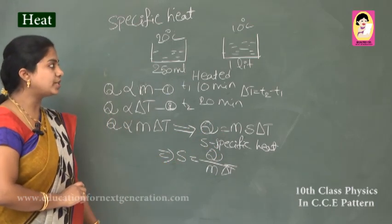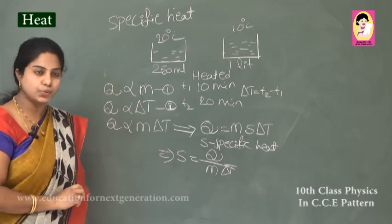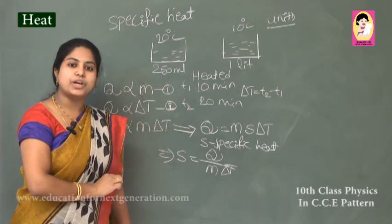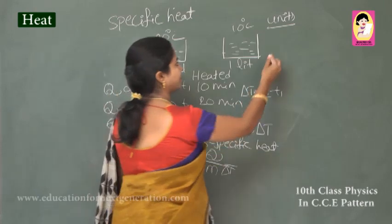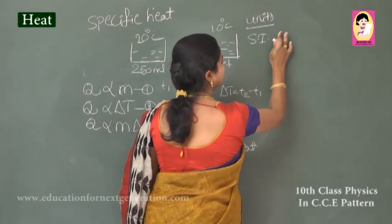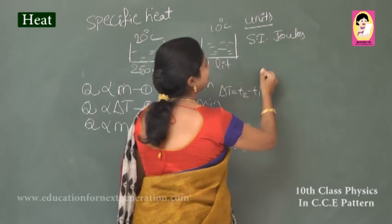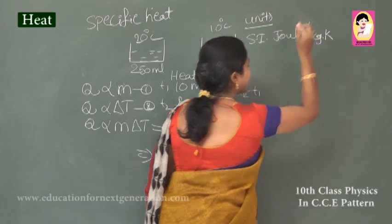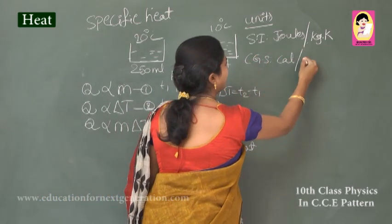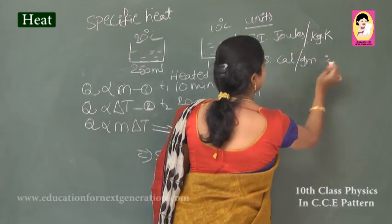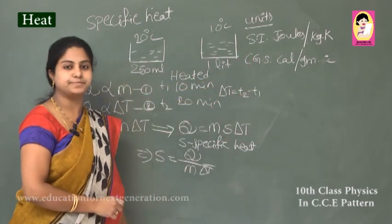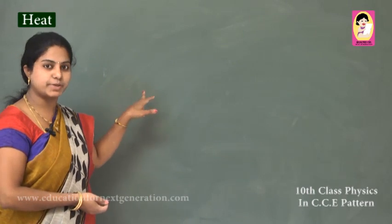The units of specific heat are given in SI and CGS forms. The SI unit of specific heat is joules per kilogram kelvin (J/kg·K), and the CGS unit is calories per gram degree Celsius (cal/g·°C). This completes the definition and units for specific heat.